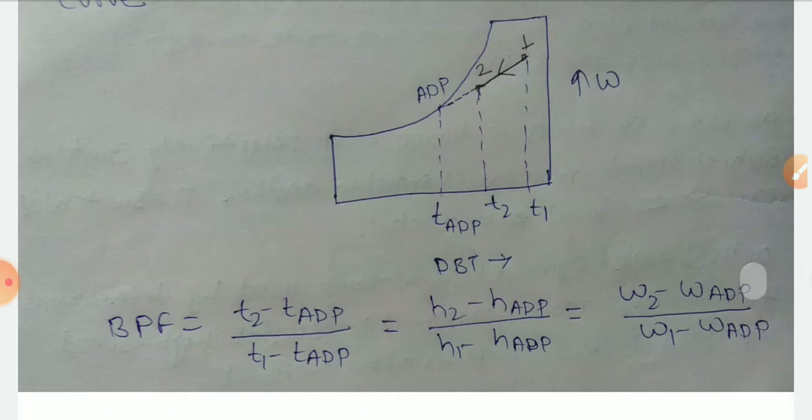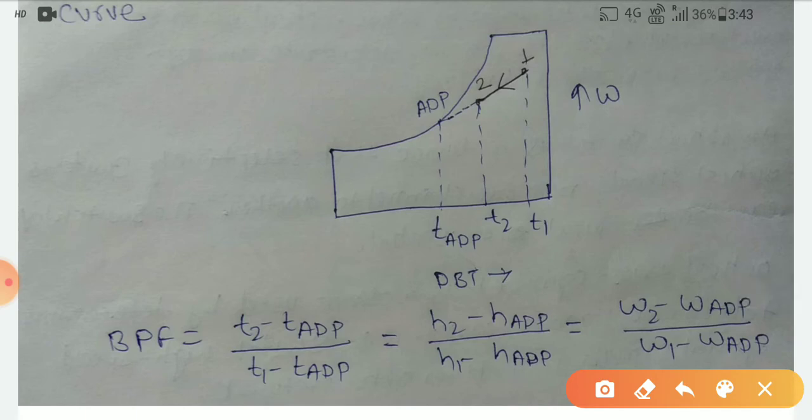So now I am going to write the bypass factor for ADP. I have already explained what bypass factor is. So you can write T2 minus TADP divided by T1 minus TADP. In the same way, you can write it in terms of enthalpy.